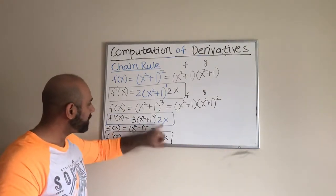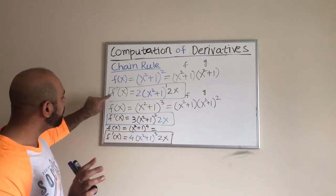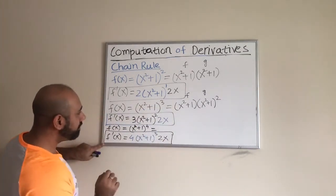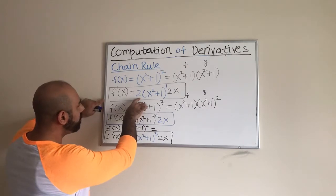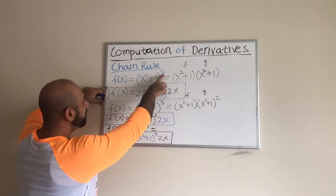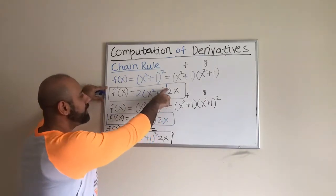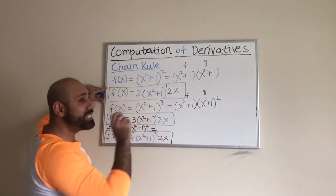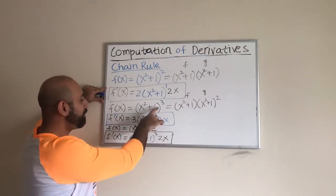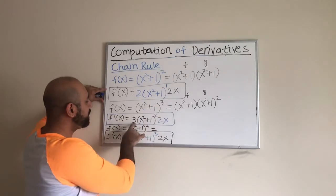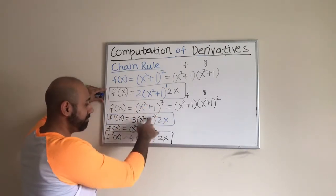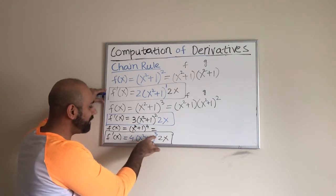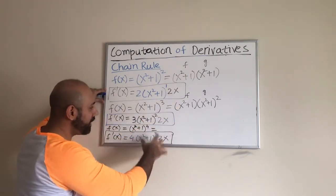Now let's focus on the pattern in the boxed results. The 2x is repeating every time. There's a coefficient of 2, then 3, then 4 — brought out in front. With the exponent, it seems like we have subtracted one from the original exponent each time. So for the cubic function we bring the 3 out front and reduce the exponent by one; for the fourth power we bring 4 down and reduce by one. And then this 2x shows up every time.